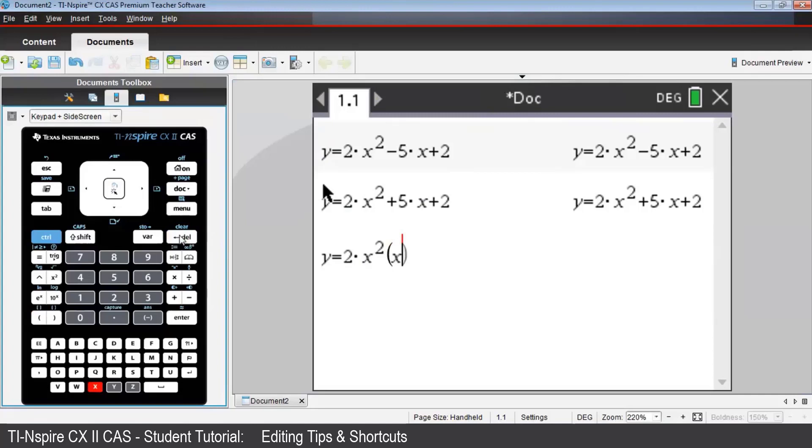Type brackets, x minus 1, and then press Enter. And your required rule will now be showing.